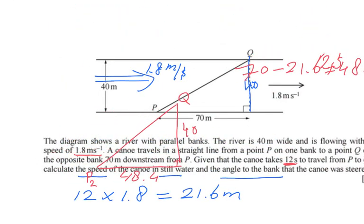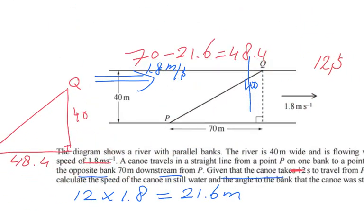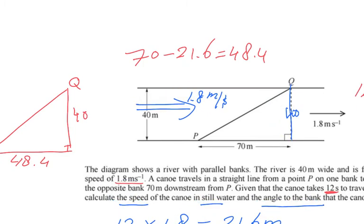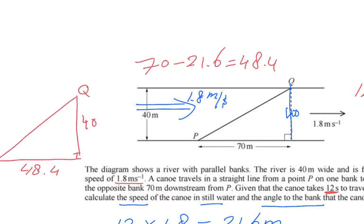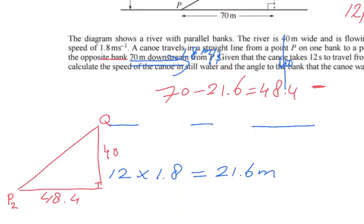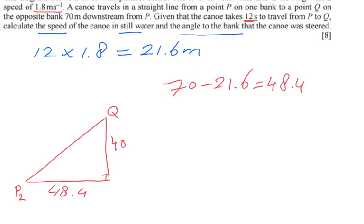All right. Just to show you again, very quickly. So this 70 meters becomes 48.4 because I subtracted the distance that the boat travels due to the speed or the force of the water, if you like. Okay. Let me get rid of that again. So there we go.